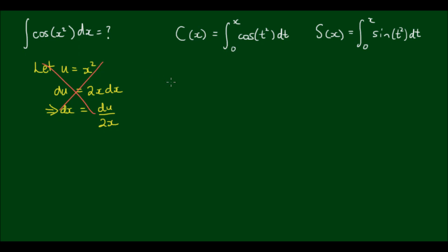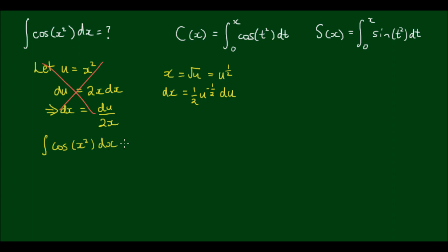However, we can still use this substitution. If u equals x squared, we can say that x equals the square root of u, which equals u to the power of one half. And dx with respect to u is one half of u to the power of negative one half. We can then sub this in, so the integral of cos(x²) dx is equal to the integral of cos(u) times one half u to the power of negative one half du.